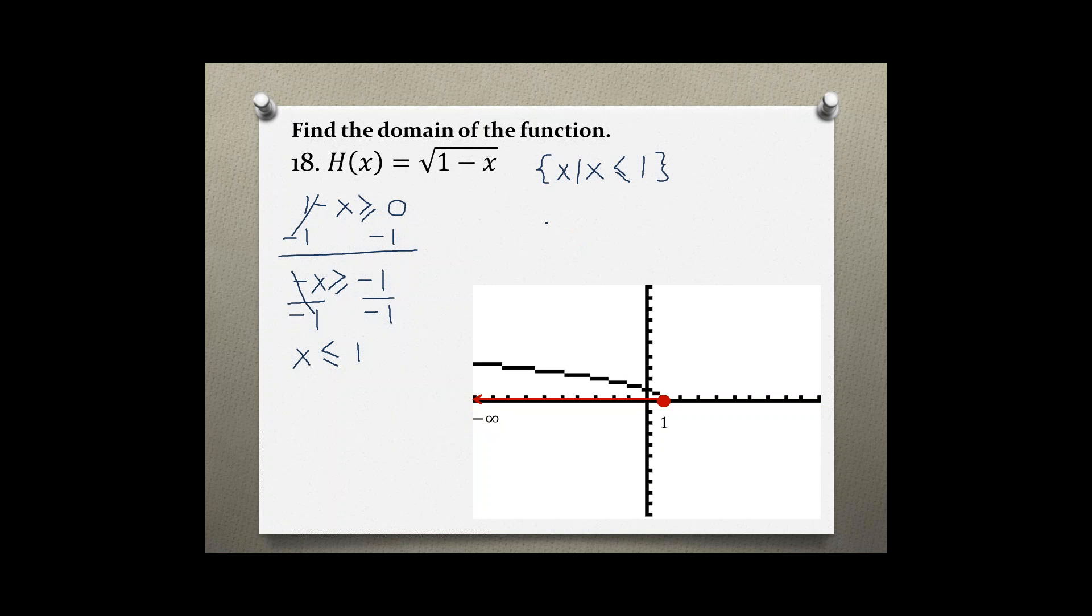Now writing the domain in interval notation, starting from the left: the values start at negative infinity and go all the way to 1. Since 1 is included, we use brackets. This is the domain in set builder notation and interval notation of a radical function.